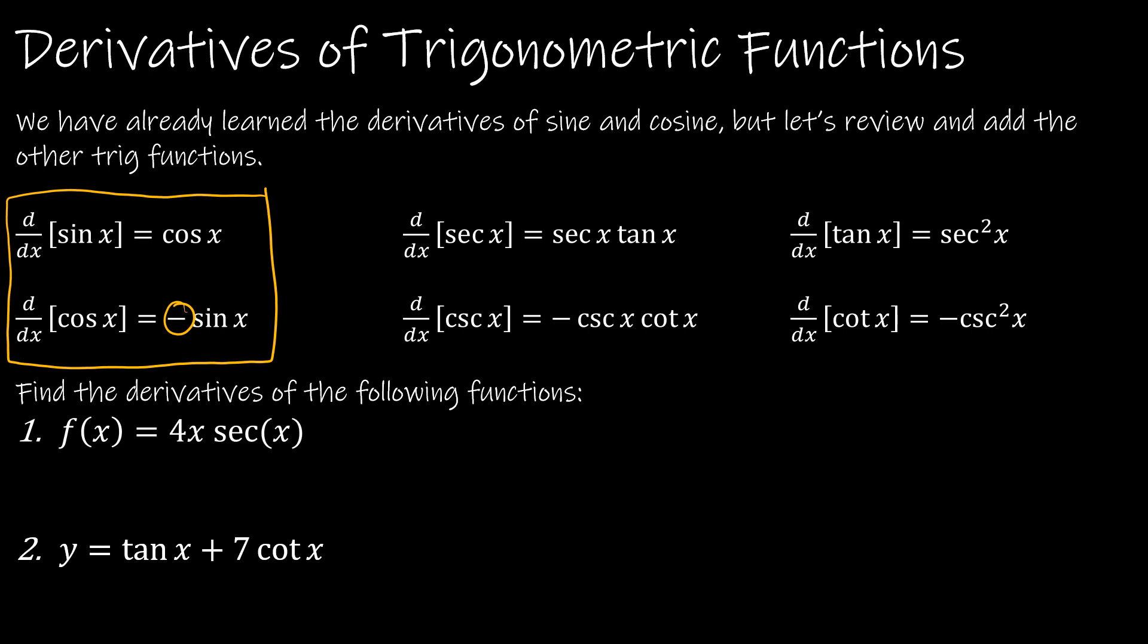Secant and cosecant kind of go together because they're both going to have that same format. The derivative of secant of x is secant of x tangent of x, but the derivative of cosecant of x, remember that's a co, so it's negative cosecant of x cotangent of x. And then the derivative of tangent of x is secant squared x, and the derivative of cotangent of x is negative cosecant squared x.